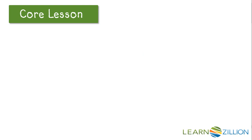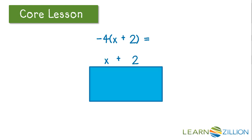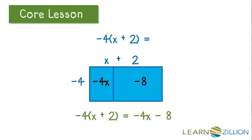Now let's take a look at distributing a negative. Let's say we have negative 4 times the quantity x plus 2. This means we are multiplying x plus 2 times negative 4. Negative 4 times x is negative 4x, and negative 4 times 2 is negative 8. So negative 4 times the quantity x plus 2 is equal to negative 4x minus 8.